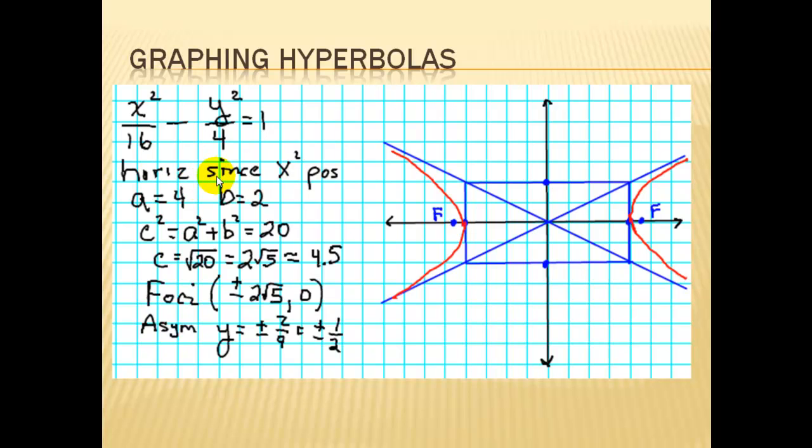We know it's horizontal. So this is a squared, so a is 4. This is b squared, it's 2. We use the Pythagorean theorem to calculate c squared, so c would be 4.5. a is our distance to our vertices from the origin, 4 units and 4 units. b is this distance here, and the first thing I drew is I put my dots for my vertices and my dots on the minor axis, and I drew this rectangle through those points.